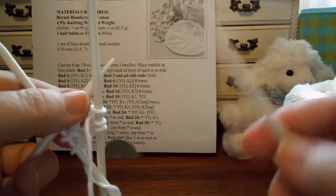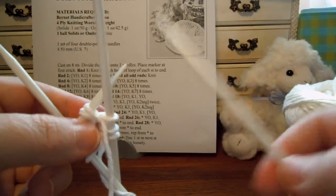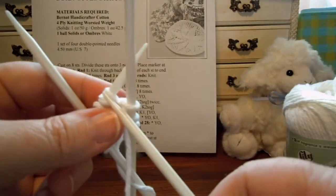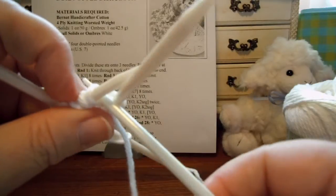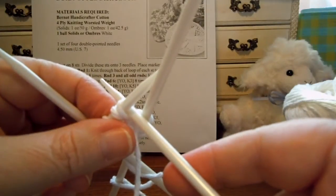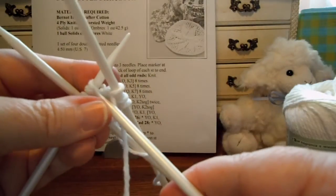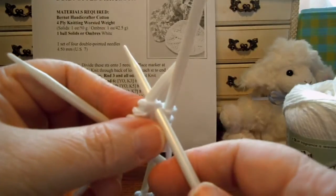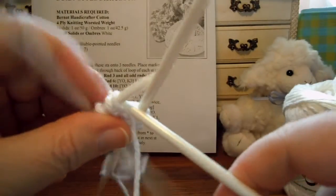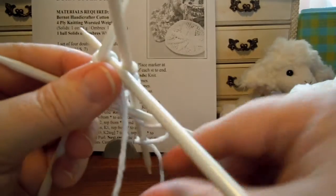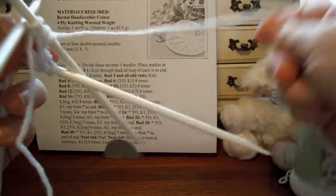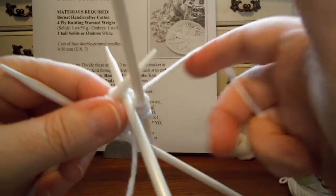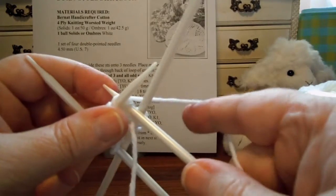Round one. Knit through the back of the loop of each stitch to the end. So you're not knitting, you're knitting in the back loop. So you go through the back. You would be going through the front normally like this, but now we're going to go through the back. The yarn got all twisted. All right. So we're going to go all the way around. I'm going to knit through the back loop.